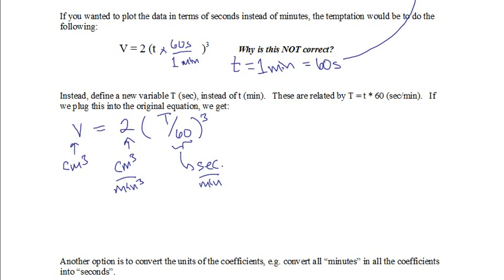You can rewrite this as 2 over 60 cubed times big T cubed. And now this new coefficient, here 2 over 60 cubed is in units of centimeters cubed per second cubed. And you can work that out yourself to figure out that that's actually true.